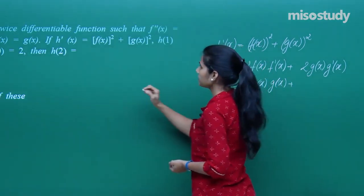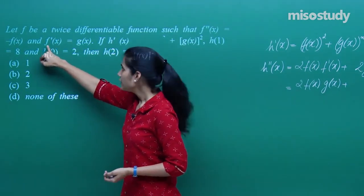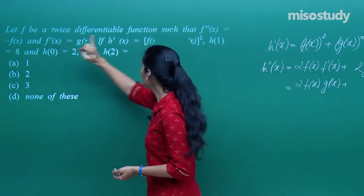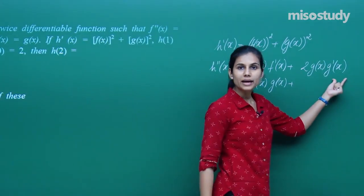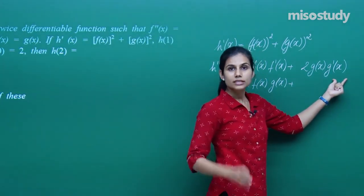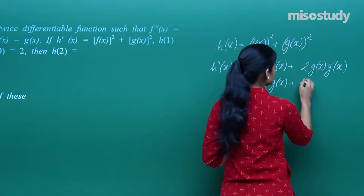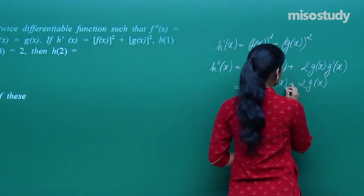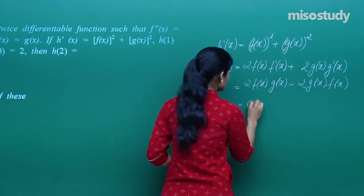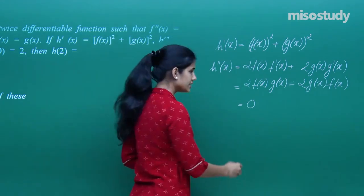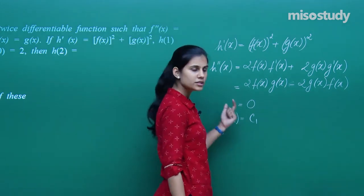What is g'(x)? If f' = g, then g' = f''. And f''(x) is given as -f(x). So directly in place of g' I can put -f. Because g = f', so g' = f'' = -f. So h''(x) = 2·f(x)·g(x) + 2·g(x)·(-f(x)) = 0. Since h''(x) = 0, h'(x) is some constant c₁.